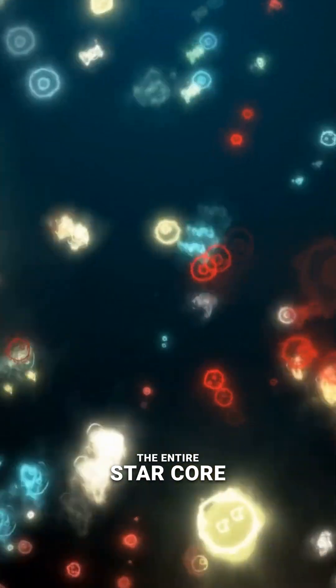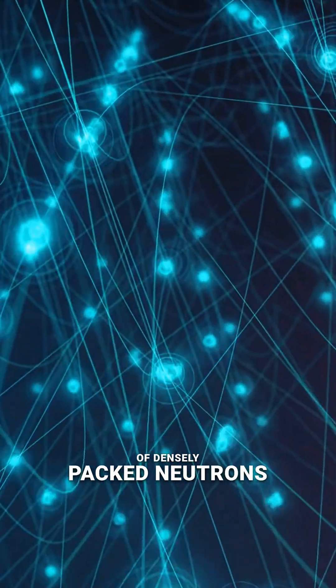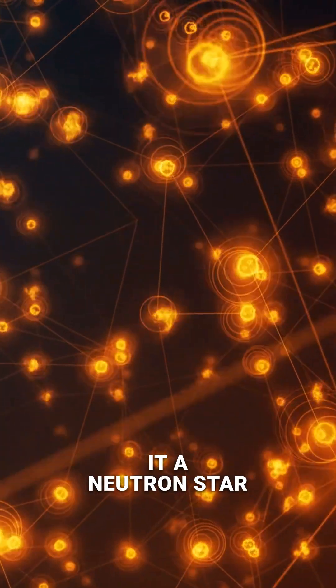Protons plus electrons equal neutrons. The entire star core becomes one giant atomic nucleus, made almost entirely of densely packed neutrons. That's why we call it a neutron star.